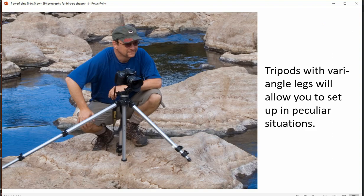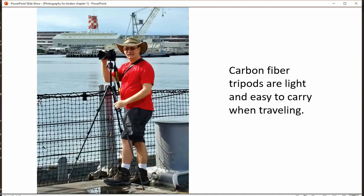Here's a photo of me with a Manfrotto tripod that has the ability to extend the legs beyond what you would normally be able to do — very useful in certain situations. It's an aluminum tripod so it's fairly heavy. My carbon fiber tripod I use when I'm camping, traveling, or backpacking — it's fairly light, the legs span out quite a bit, and it has quite a few nice features.